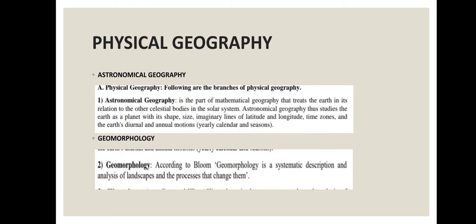Let's move to physical geography, the first branch. The very first sub-branch is astronomical geography. Astronomical geography is the part of mathematical geography that treats the earth in its relation to the other celestial bodies in the solar system. In this branch we compare the earth with other celestial bodies and planets in the solar system. Astronomical geography studies the earth as a planet.